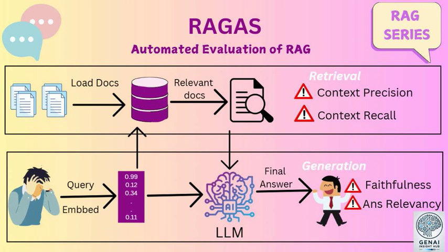That's precisely the challenge RGAS addresses. Traditional evaluation methods often rely on pre-written correct answers, which isn't always feasible or realistic, especially when dealing with rapidly evolving information. RGAS takes a different approach, focusing on three core aspects: faithfulness, answer relevance, and context relevance.